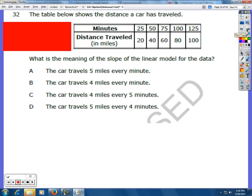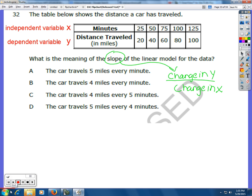The table below shows the distance a car has traveled. Minutes and then distance. What is the meaning of the slope of the linear model? Remember the slope is the change in Y divided by the change in X. Because the distance depends on how much time you've actually traveled, X is the minutes and Y is the distance. If you look at the change, every single time that the minutes go up 25, the distance goes up by 20 miles.